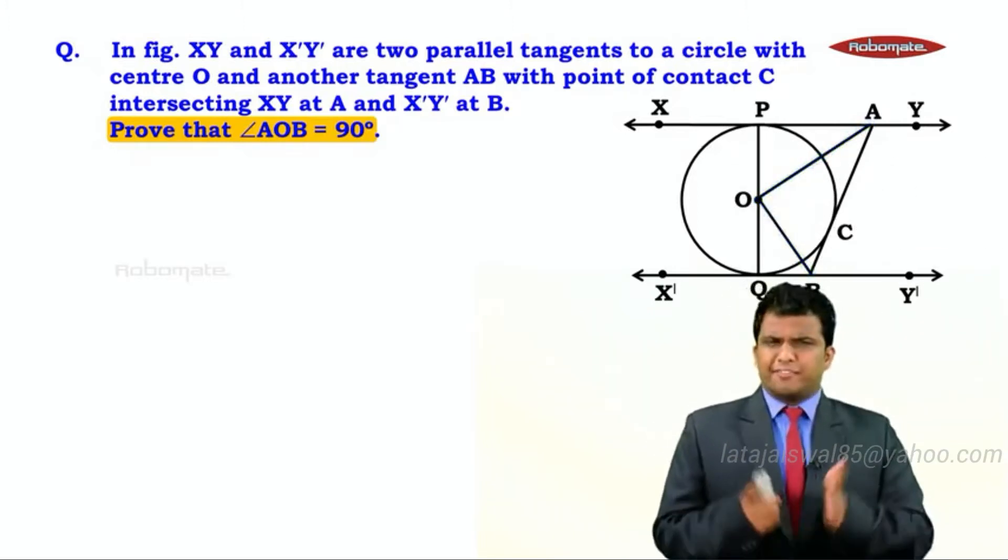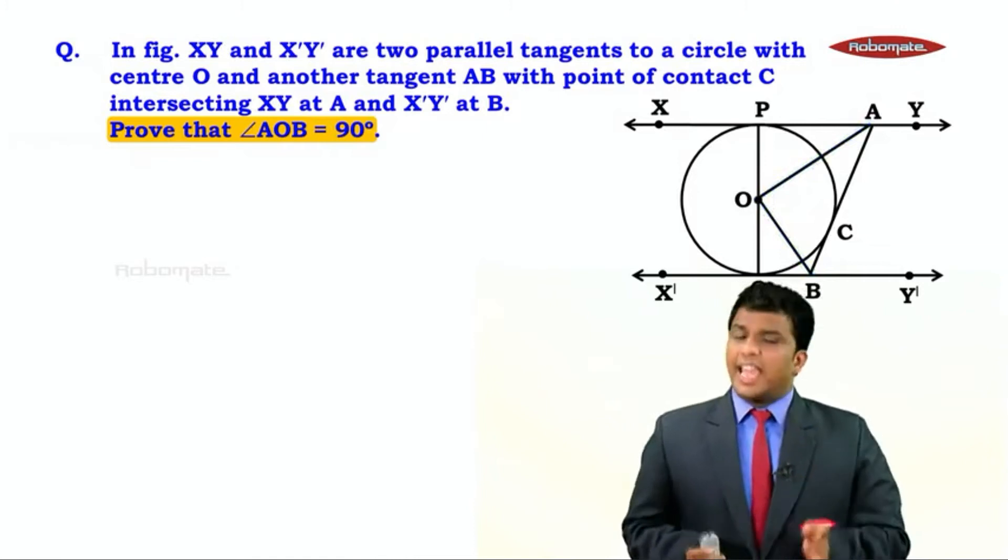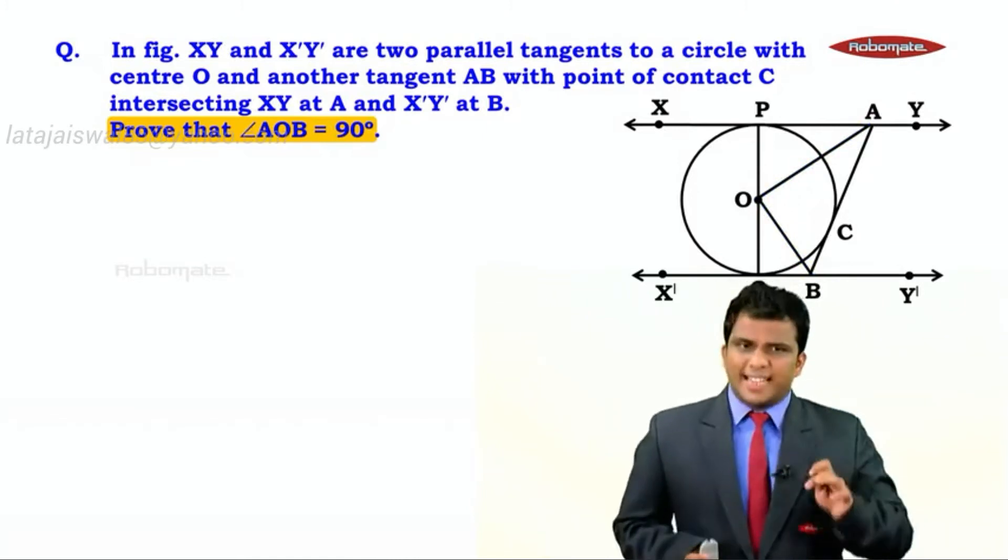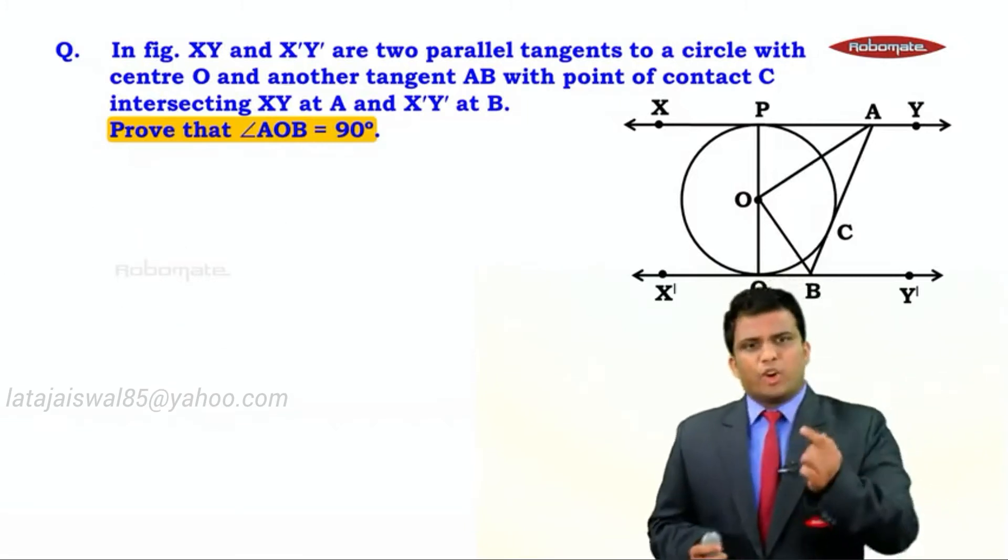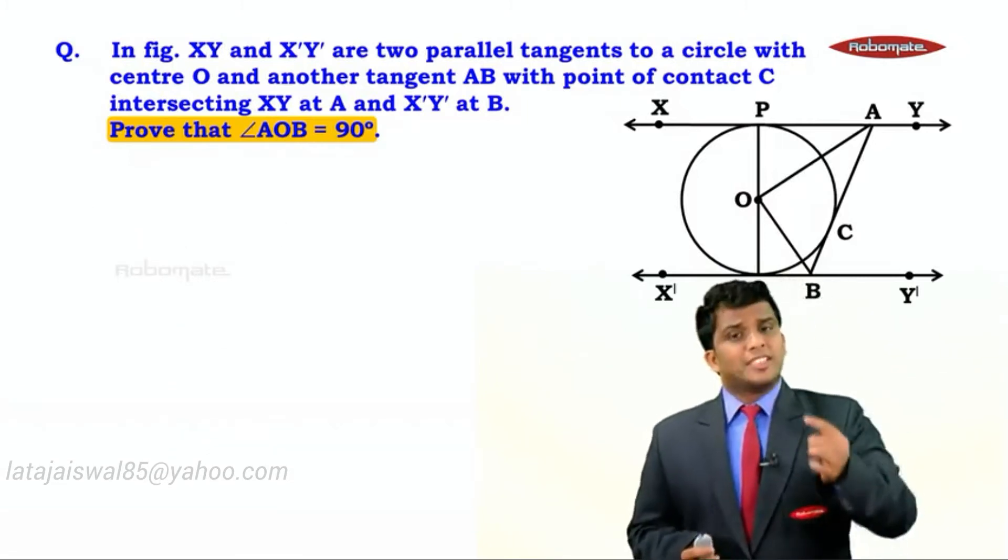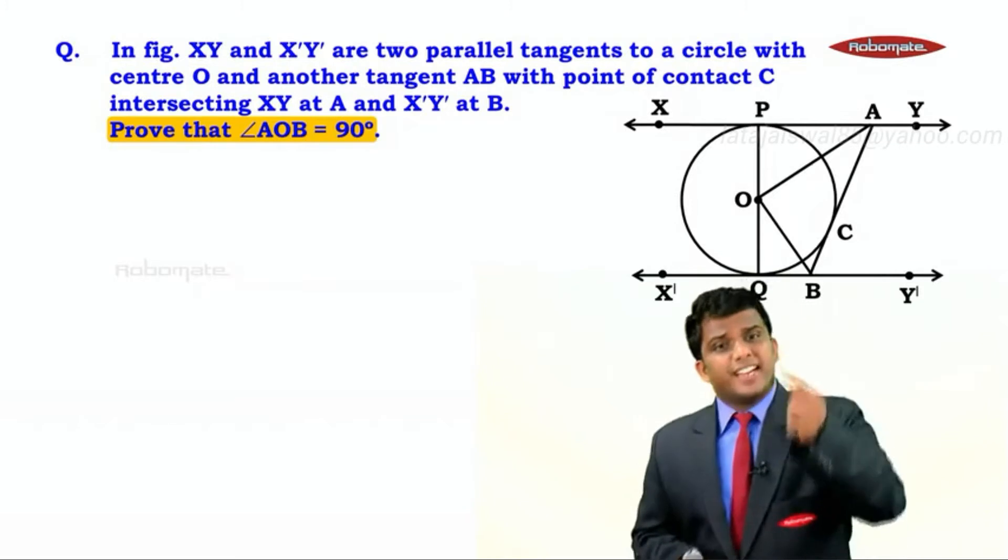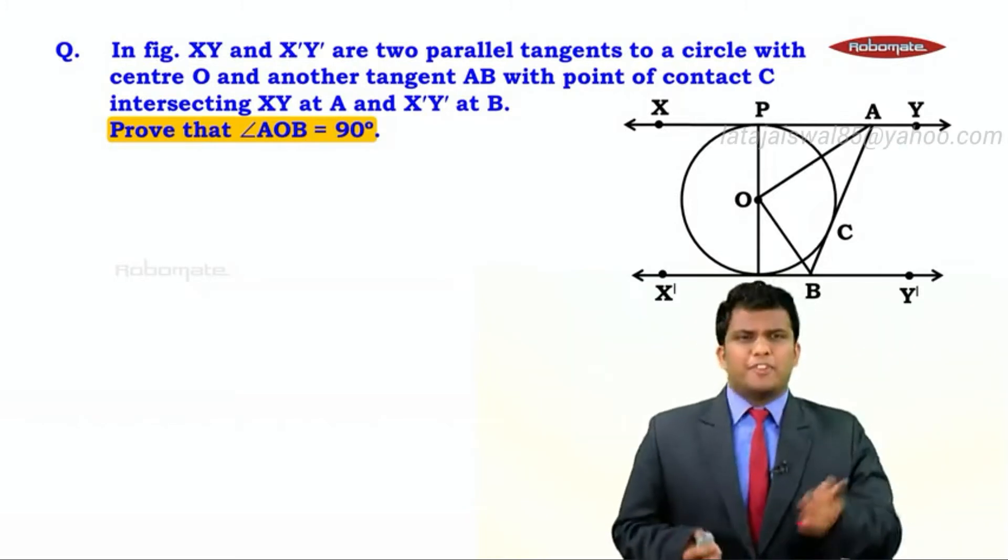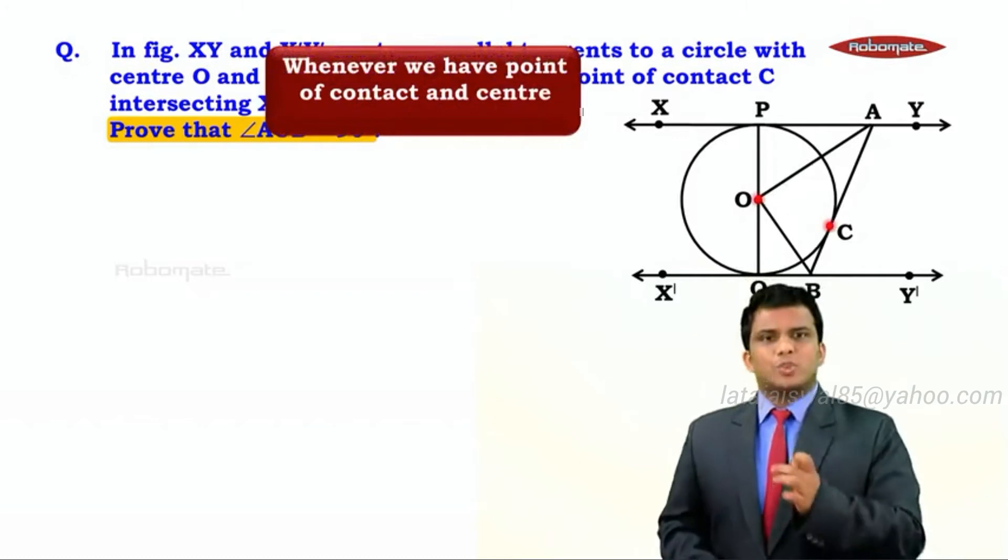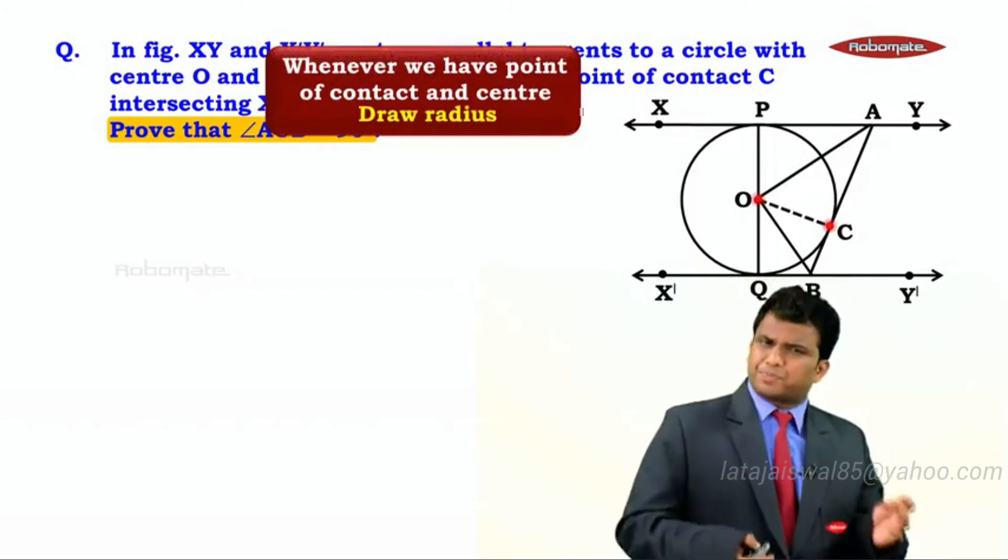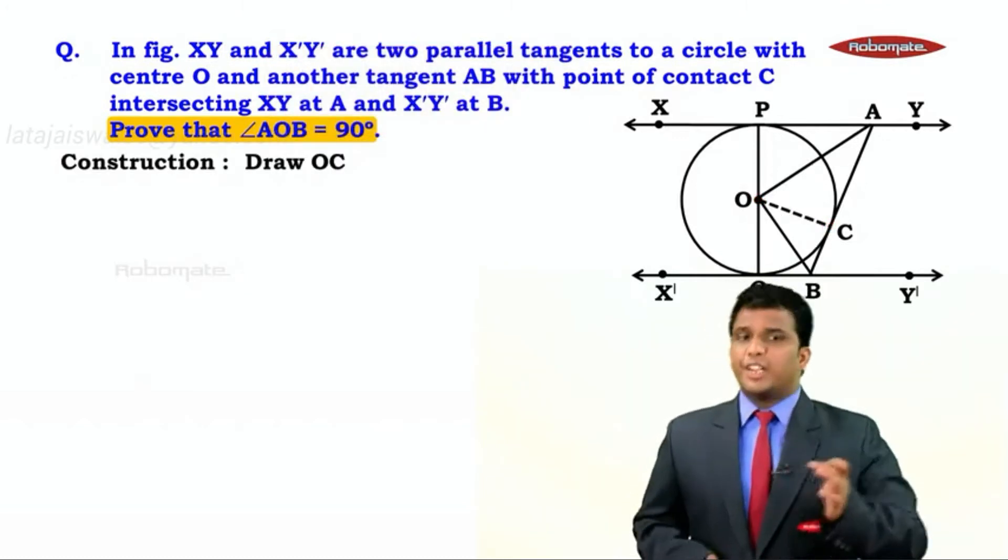Now to start with, we have three tangents and we know for a circle if we have a tangent we can always have a radius drawn. For the tangent XY we already have radius OP. For the tangent X'Y' we have radius OQ, but for the tangent AB we don't have a radius. So what we do is let's draw the radius OC as a construction. In the construction we write OC.